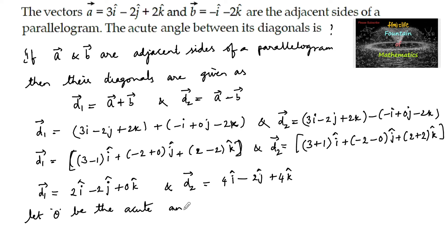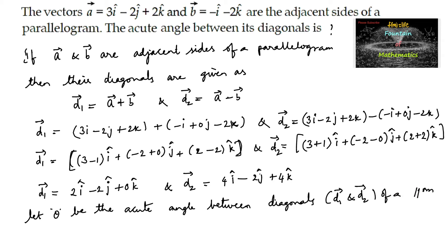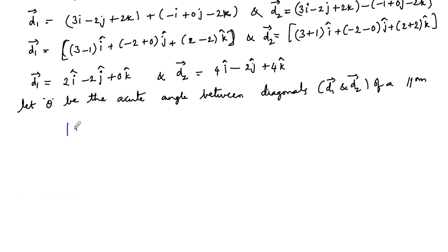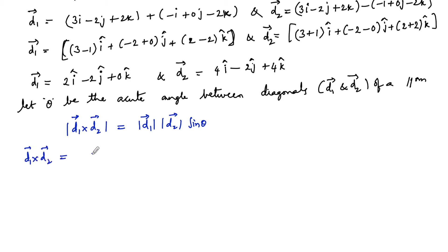Let theta be the acute angle between the two diagonals d1 and d2 of the parallelogram. We use the cross product formula: the magnitude of d1 cross d2 is equal to mod d1 times mod d2 times sine of the angle between the two vectors. So let us find d1 cross d2.